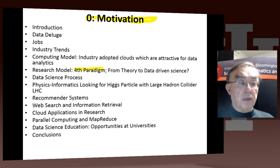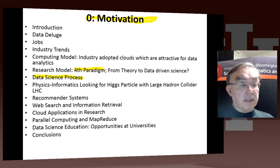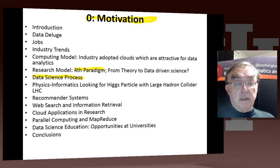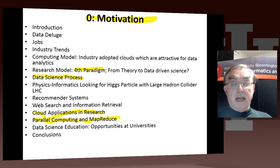Then we have the actual process of data science. That's pretty important, because if you want to be a data scientist, you better know what the process is. And we then go to an area which we come back to in much greater detail in the class: physics informatics, looking for the Higgs boson. We do recommender systems, which are used in e-commerce, or commerce informatics. We do web search, which is a major topic of the class. We have a broad overview of cloud applications, and we do this core discussion of parallel computing and how MapReduce allows you to organize parallel computations.